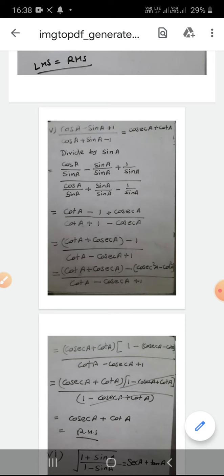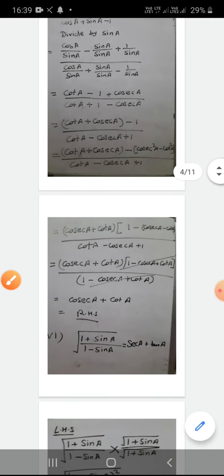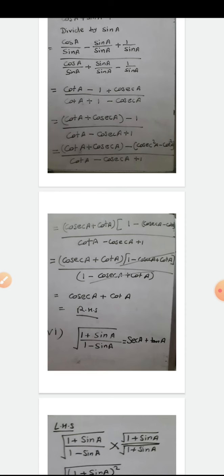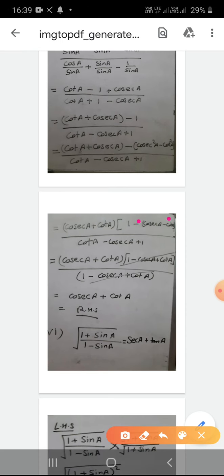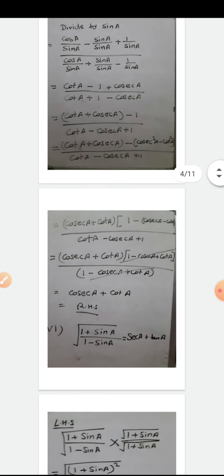When I take (cosec A + cot A) common from the numerator, the remaining part is [1 + (cosec A - cot A)], which is (1 + cosec A - cot A). The denominator is cot A + 1 - cosec A, which is also (1 + cosec A - cot A) with the same terms, so both brackets cancel. What remains is cosec A + cot A, which is exactly the right hand side. LHS = RHS for Part 5.